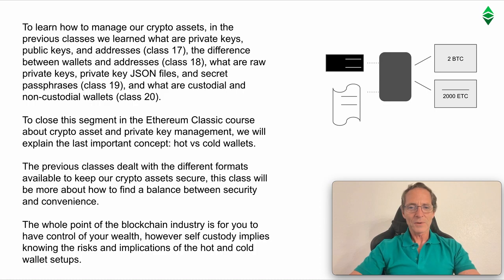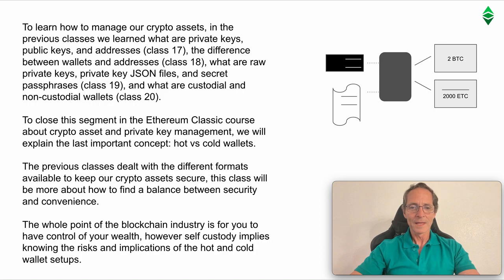To learn how to manage our crypto assets, in the previous classes we learned what are private keys, public keys and addresses in Class 17, the difference between wallets and addresses in Class 18, what are raw private keys, private key JSON files and secret passphrases in Class 19, and what are custodial and non-custodial wallets in Class 20. To close this segment in the Ethereum Classic course about crypto assets and private key management, we will explain the last important concept: Hot and Cold Wallets.